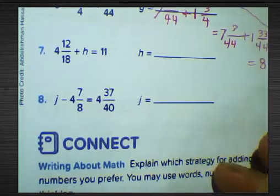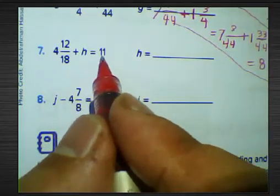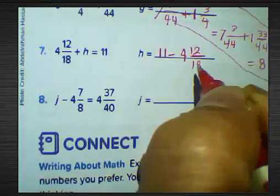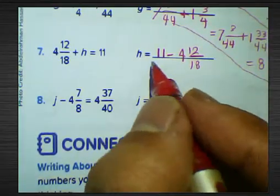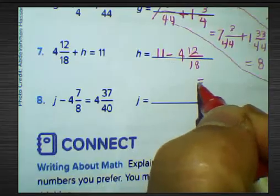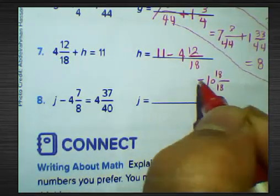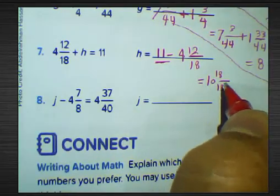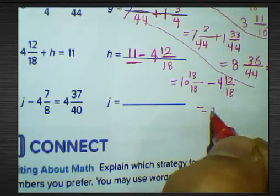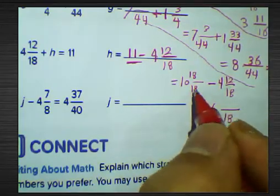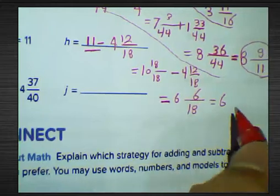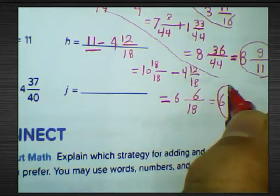Question number seven: find the result. 11 subtract by 4 and 12 over 18. Convert 11 to a mixed number: 10 and 18 over 18. So: 10 and 18 over 18 subtract by 4 and 12 over 18. Find the difference: 10 minus 4 equals 6, and 18 minus 12 equals 6, over 18. Simplify 6 over 18 by dividing by 6: 6 divided by 6 equals 1, 18 divided by 6 equals 3. The result is 6 and 1 over 3.